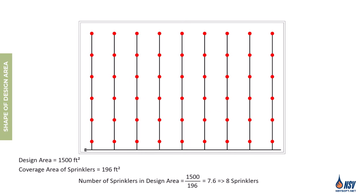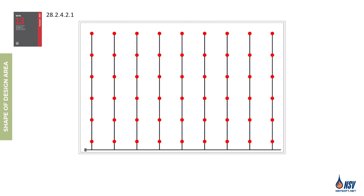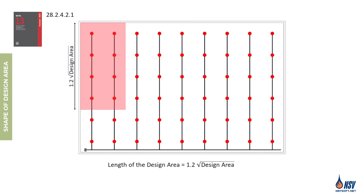Once we determine the number of sprinklers expected to activate during a fire, the next question is which sprinklers should we assume will operate — in other words, what is the shape and layout of the design area? In general, the design area is assumed to be a rectangular shape with the length of the rectangle parallel to the branch lines, measuring at least 1.2 times the square root of the total design area.